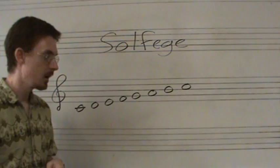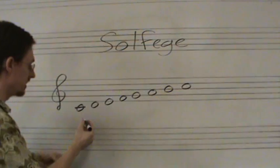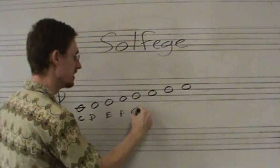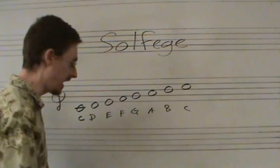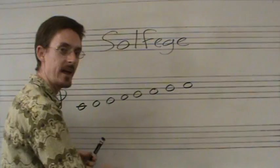There are other systems already, some of which you may already know, like the note names: C, D, E, F, G, A, B, C. You've probably already learned that. Those are the names we give to the notes. There are other ways we can refer to scale degrees, or the names of the notes within the scale.